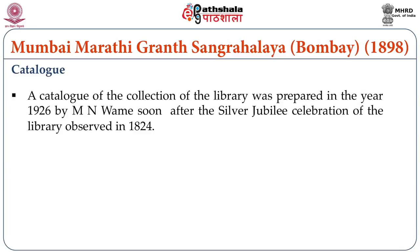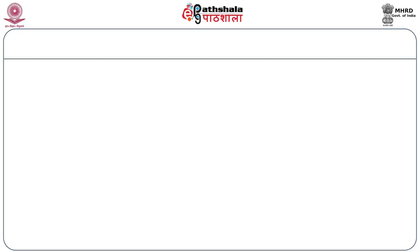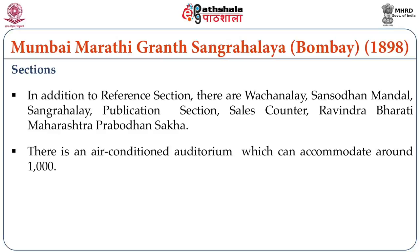The library celebrated its golden jubilee in 1949 and the diamond jubilee in 1958. Today the library has three-storied buildings with a large number of sections as well as an auditorium which can accommodate 10,000 individuals. The various sections of this library are Vachanalaya, Samshodhan Mandal, Sangrahalaya, Publication Section, Sales Counter, and Ravindra Bharati.